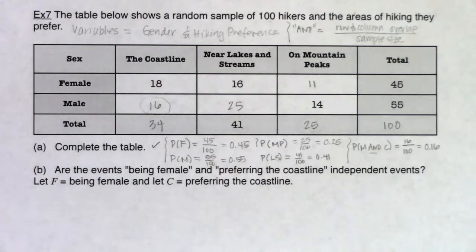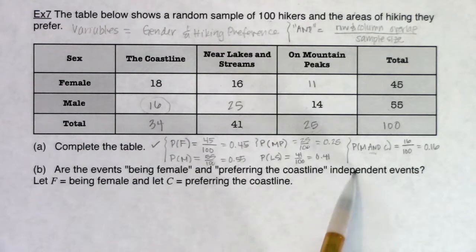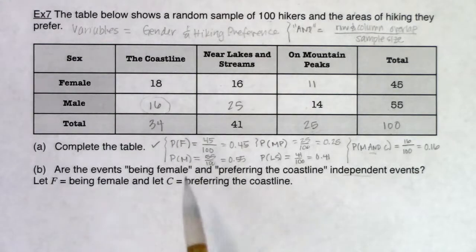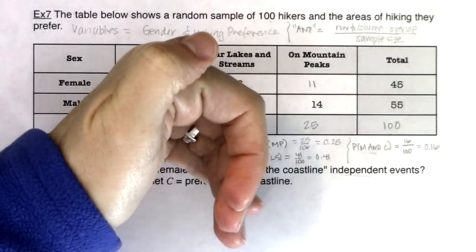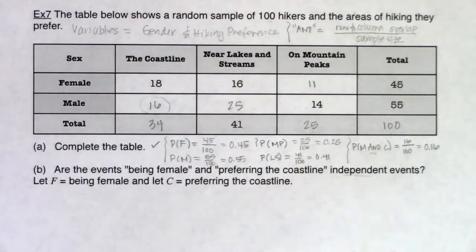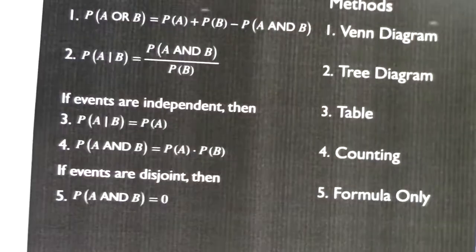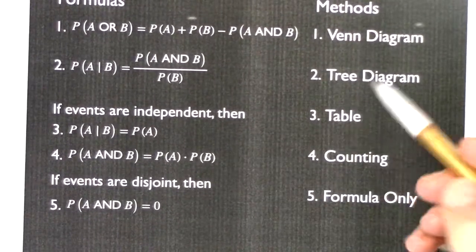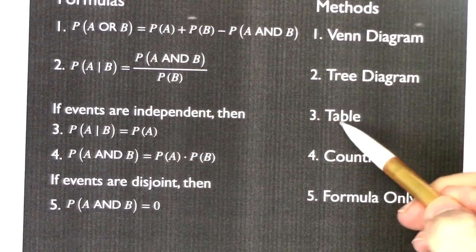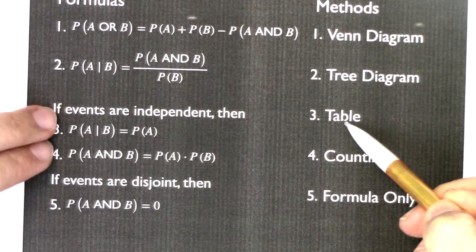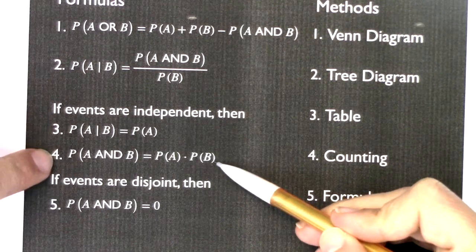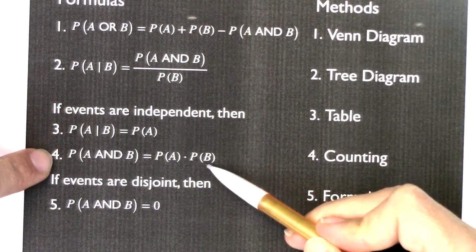The first direction asks: are the events being female and preferring the coastline independent? My answer is either yes, they are independent, or no, they are not independent — I'll have to crunch some numbers. If we're talking about independent events, I have a table method combined with either equation 3 or 4. My bias is I always pick 4, so I'm going to do a table problem and equation 4.